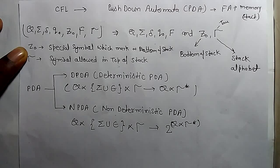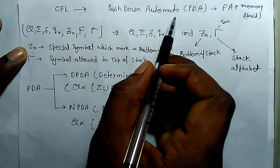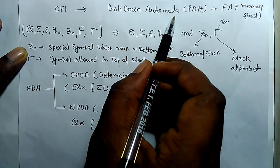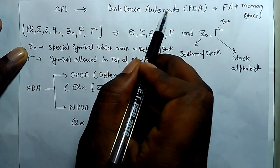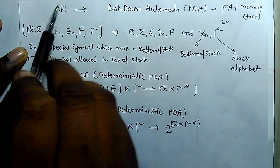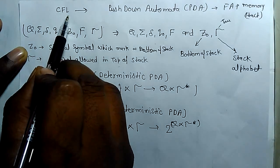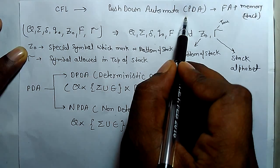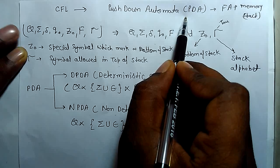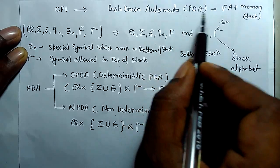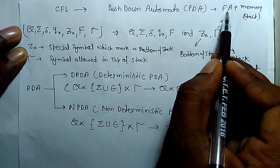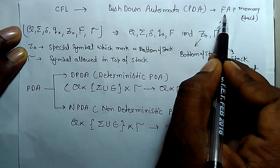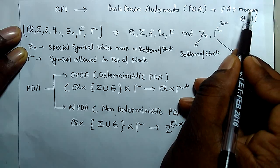Today we are going to learn pushdown automata. The pushdown automata is a machine that accepts context-free language, and it is constructed with a finite automata and memory.